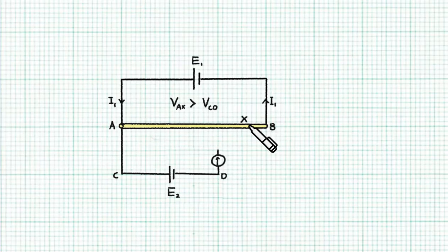Now suppose we are going to tap our jockey too far to the right such that VAX is larger than VCD before the tap is made. So now when we do make the tap, what's going to happen?